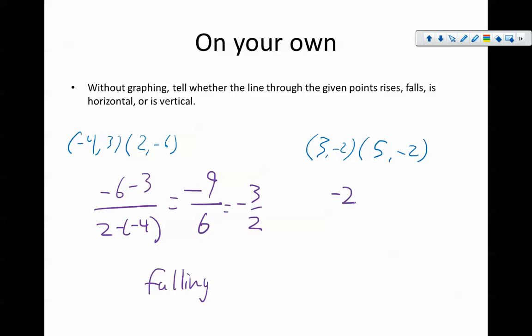And for the second one, negative two minus negative two over five minus three gives us zero over two. The zero is in the numerator which makes this zero, therefore it is horizontal.